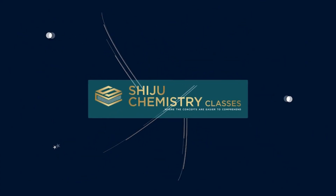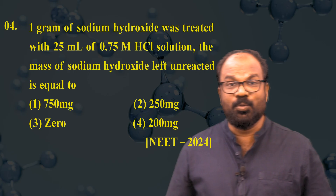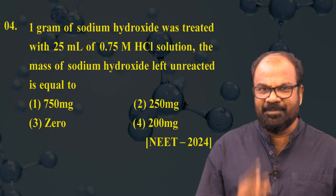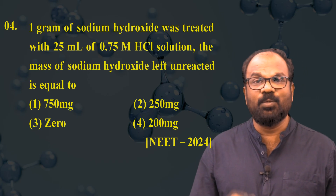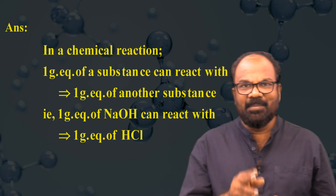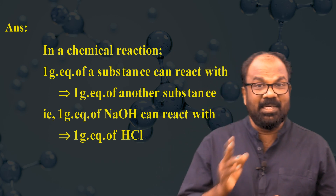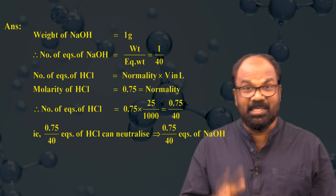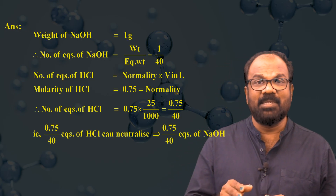Question number four: one gram of sodium hydroxide was treated with 25 mL of 0.75 molar HCl solution. The mass of sodium hydroxide left unreacted is — option (1) 750 mg, option (2) 250 mg, option (3) zero, option (4) 200 mg. In a chemical reaction, one gram equivalent of a substance reacts with only one gram equivalent of another substance. The number of equivalents of NaOH = weight / equivalent mass = 1/40 (since equivalent mass of NaOH is 40).